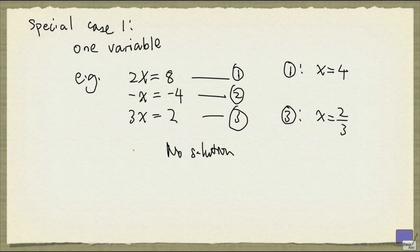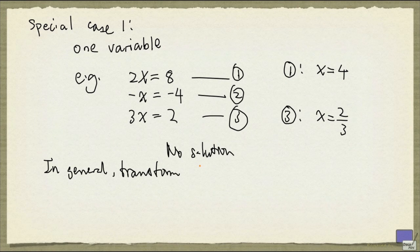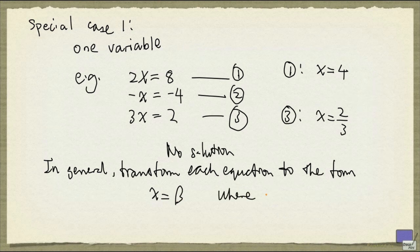What we do is, we do what we have done up here. We try to turn every single equation to the following form. So in general, transform each equation to the form x equal to beta, where beta is a constant.